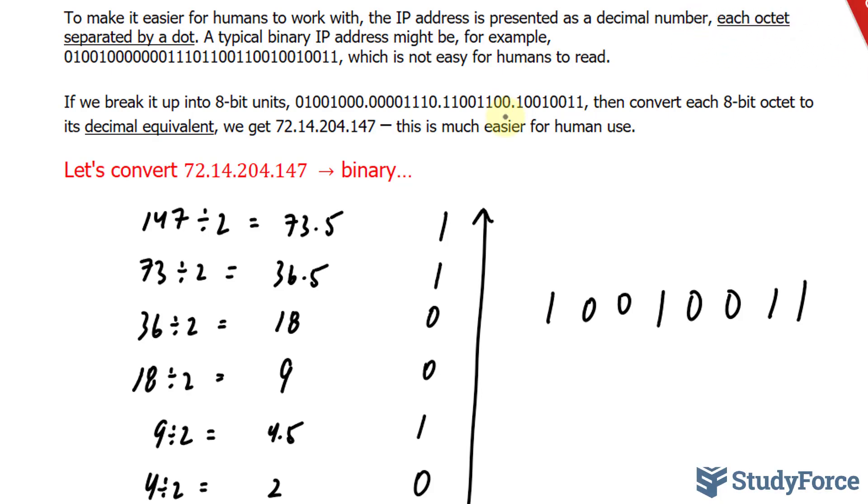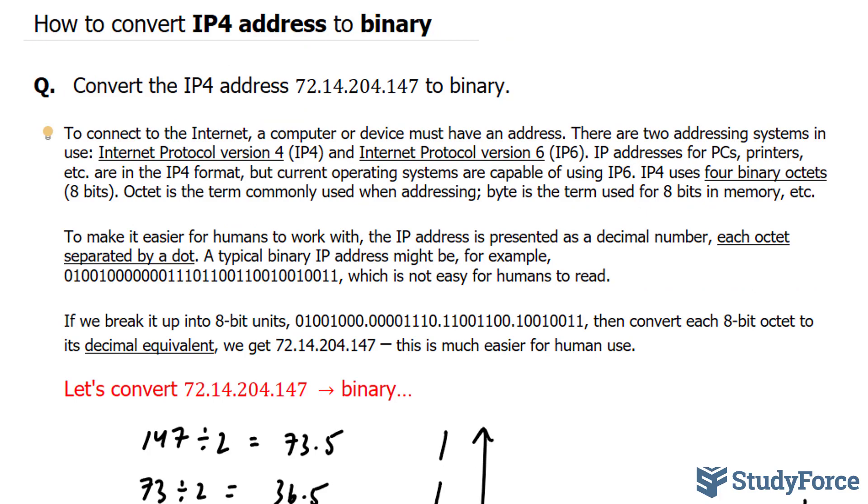So what you have to do technically is do this three more times. For the next number, it would be 204. After that, it's 14. And after that, it's 72. Once you have all four converted, you'll end up with the binary number in which the computer can read. And so there you have it. That is how to convert IP4 address to binary.